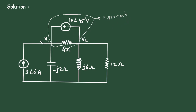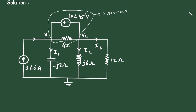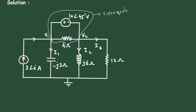Now let us assume the direction of current. Here we can see this is the direction of 3 ampere current. Let us assume this is a reference node or ground node. Now let us say this is current I1, this is current I2, and this is current I3. We are considering all the currents towards this reference node. Now let us apply KCL at this supernode.